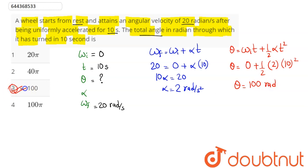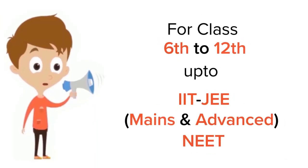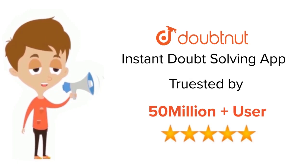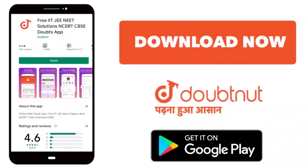100 radians - that is option number 3 is the correct answer. Hence 3 is our answer. For class 6th to 12th, up to IIT-JEE and NEET level, trusted by more than 5 crore students, download Doubtnut app today.